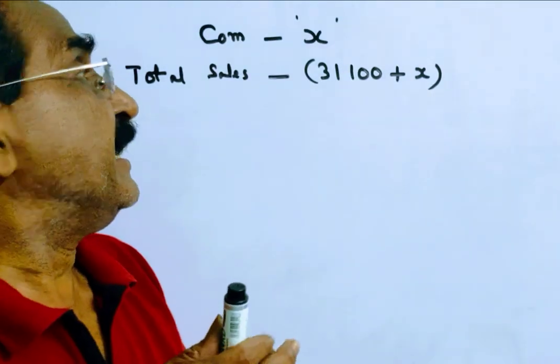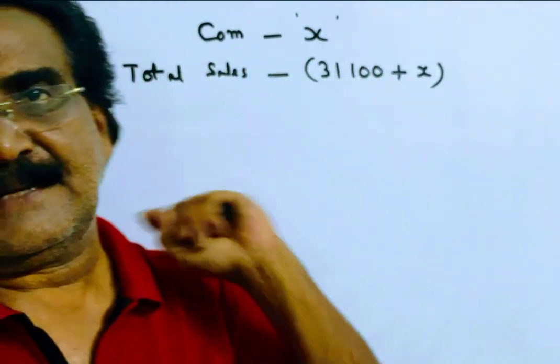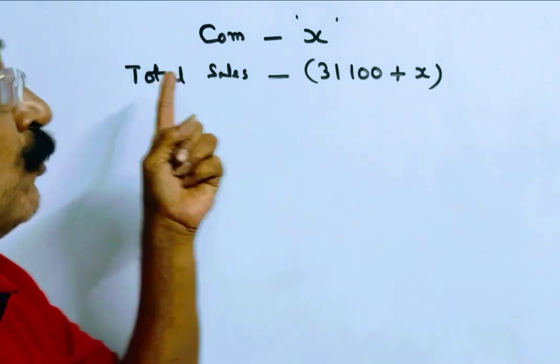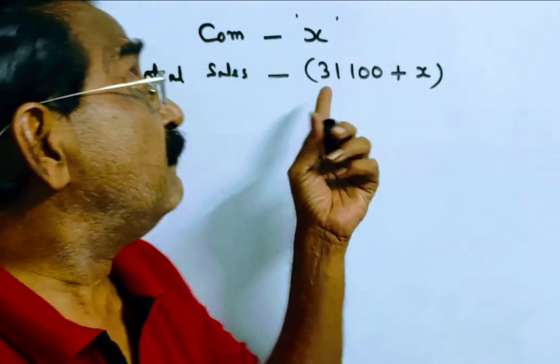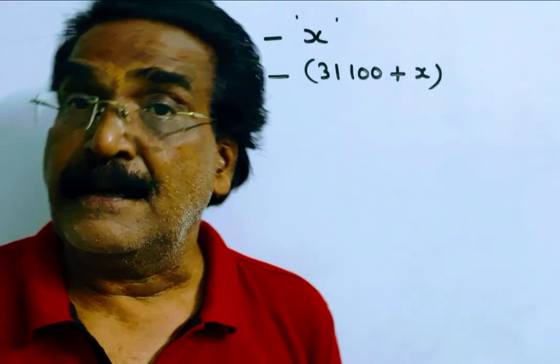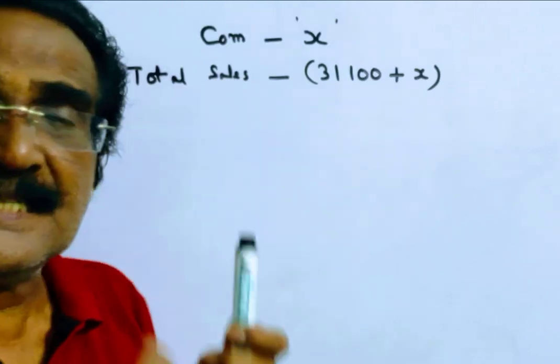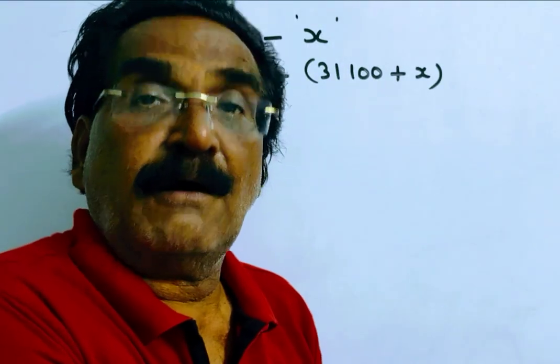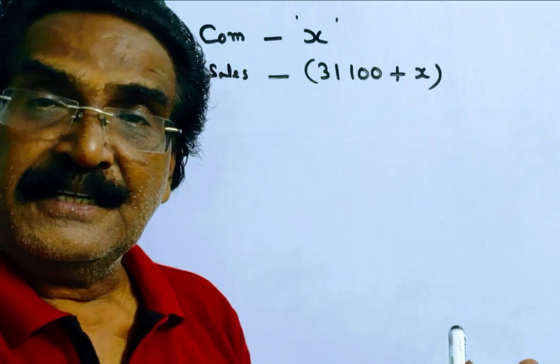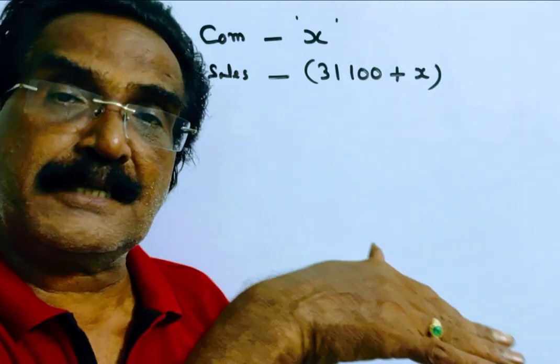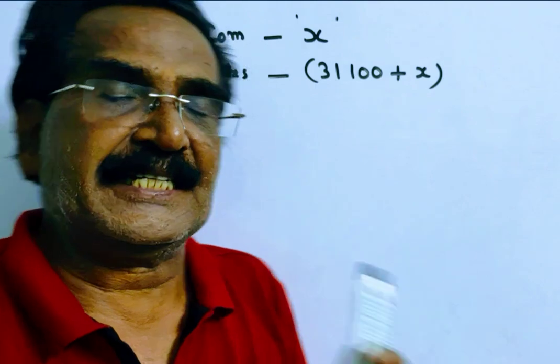Say the commission of the salesman is X. Now the total sales will be 31,100 plus X because he remits 31,100 after deducting his commission. So that means the total sales must be 31,100 plus X.